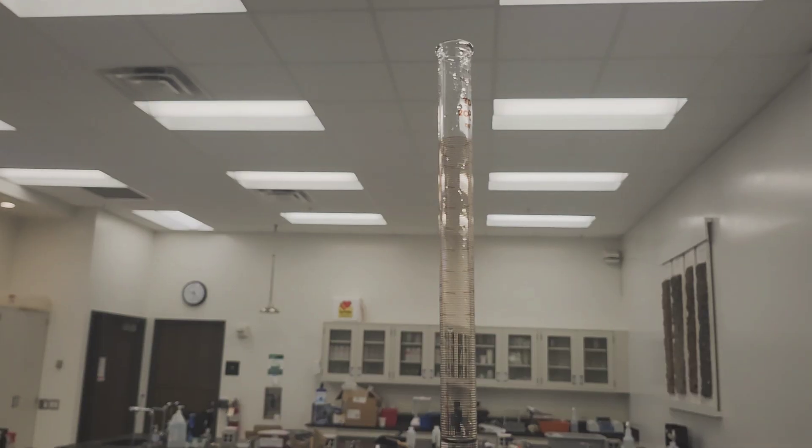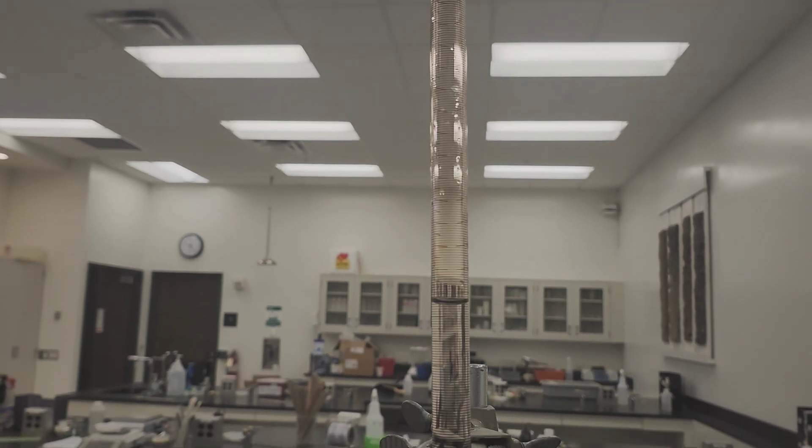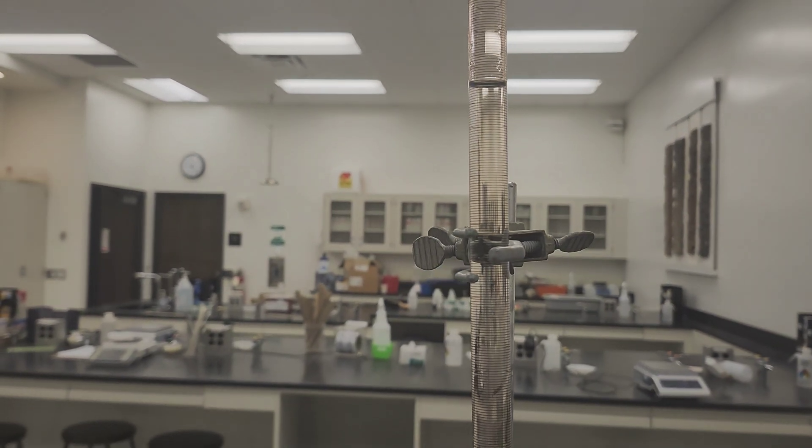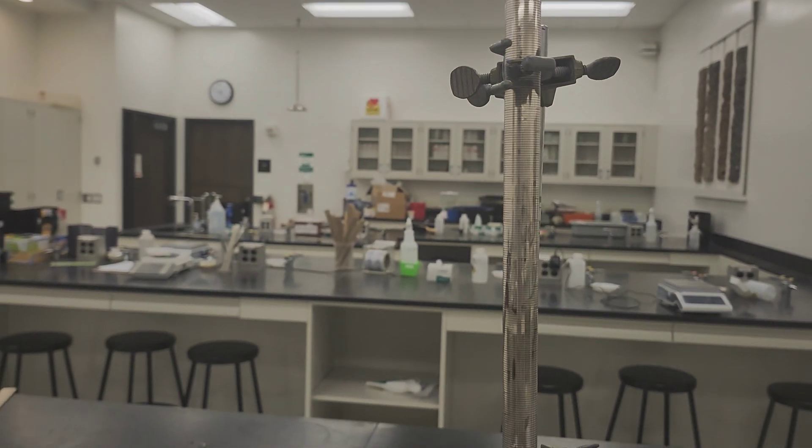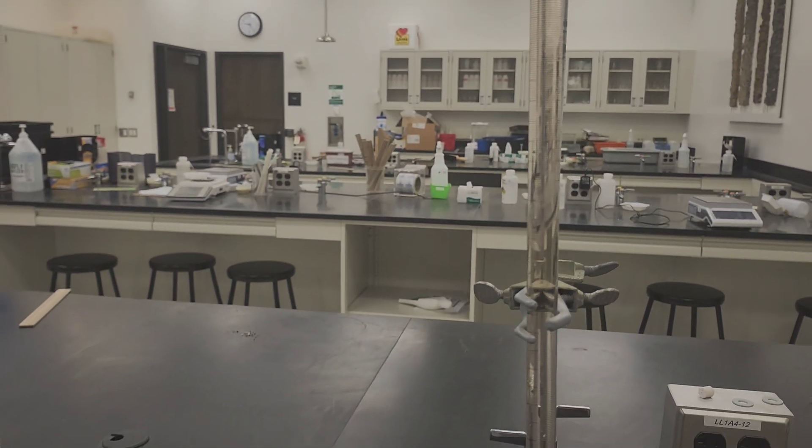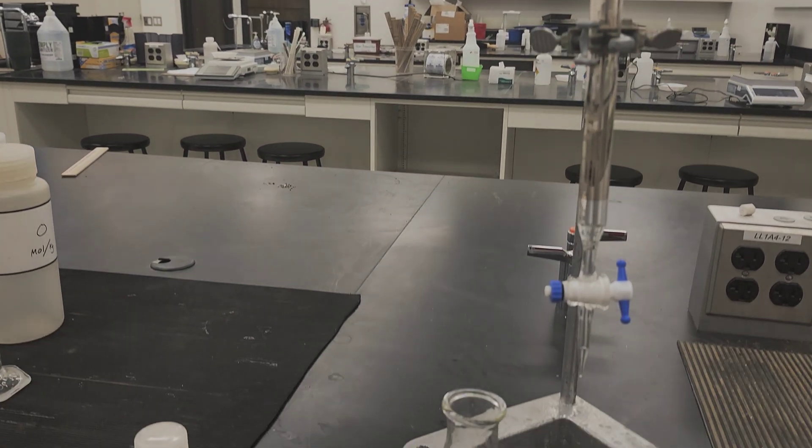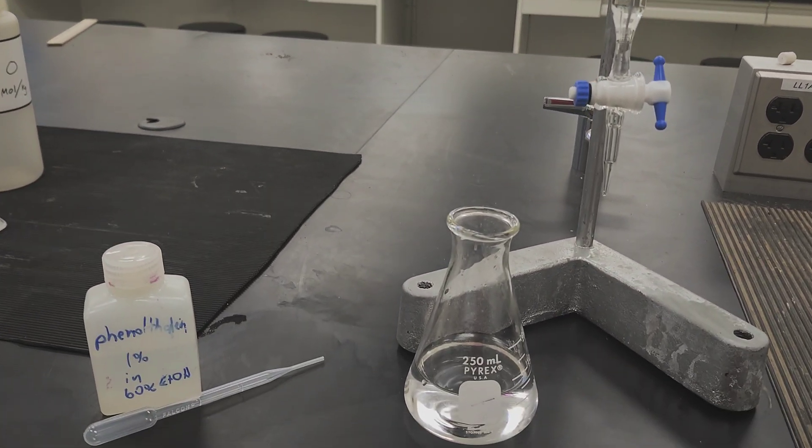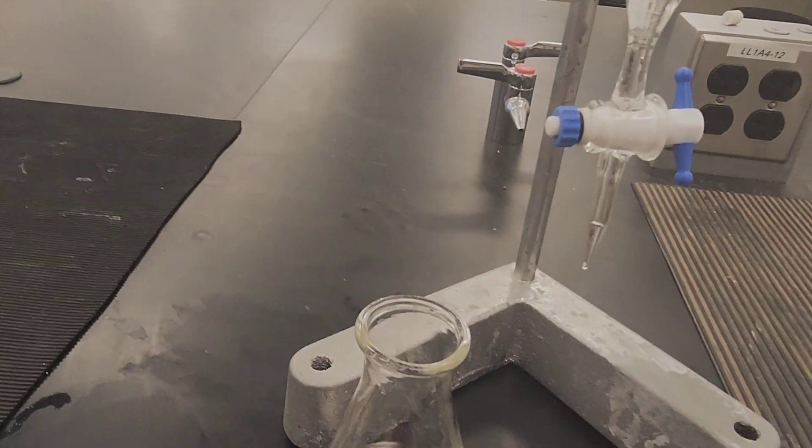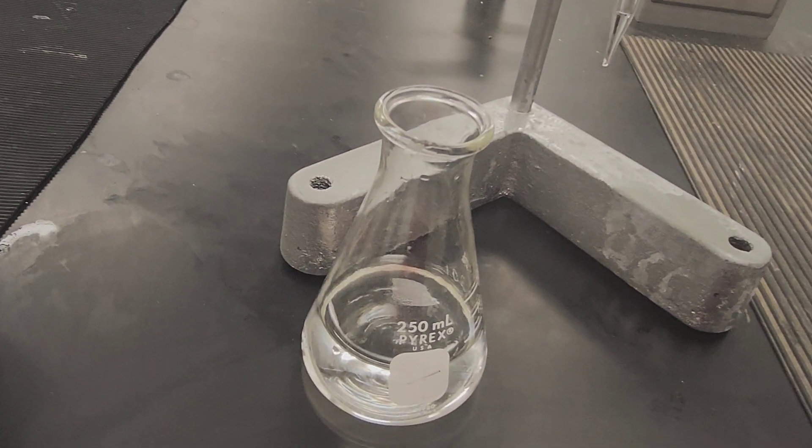The next step is titration. Before that, we need to add three drops of phenolphthalein indicator and we need to have a sodium hydroxide solution in the burette. Notice the color of the solution is transparent, and when we add phenolphthalein solution it still remains transparent.